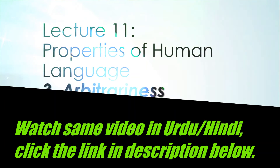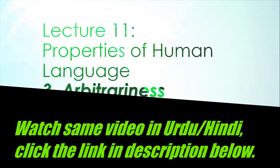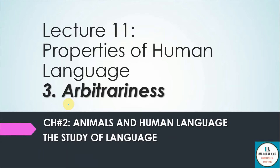In the name of Allah, the entirely merciful, the specially merciful. The peace, mercy and blessings of Allah the Almighty be upon all of you. I am Umar ibn Abit and this is lecture 11, Properties of Human Language. In this lecture we are going to look at arbitrariness. In the last lecture I told you about displacement and in the second last lecture I told you about reflexivity, which were two properties of human language as well. So let's start.